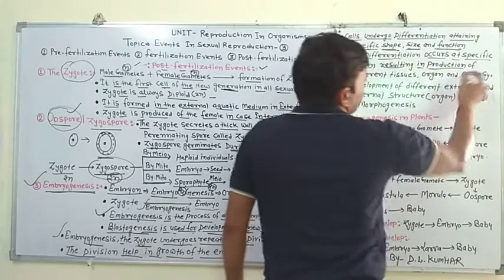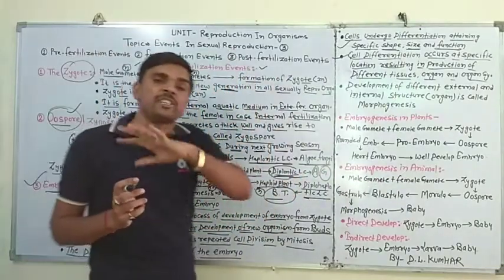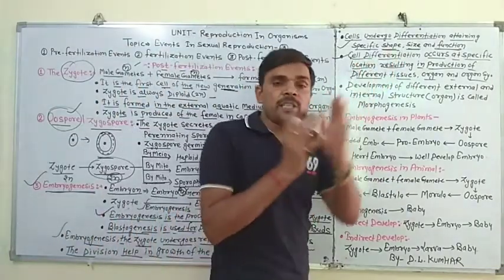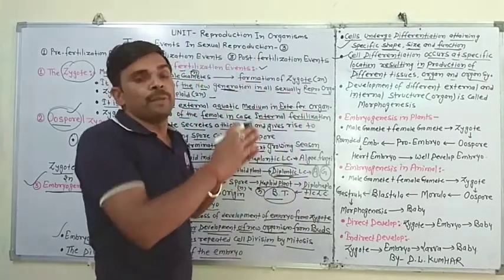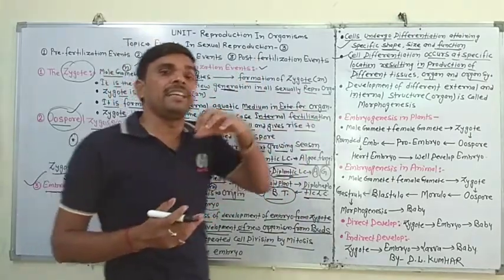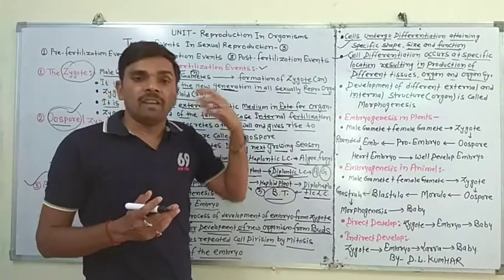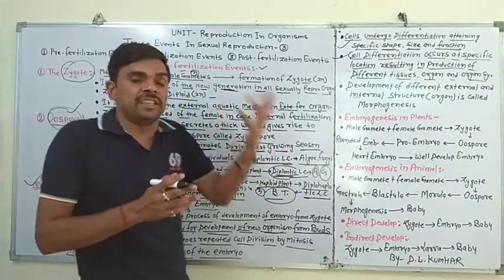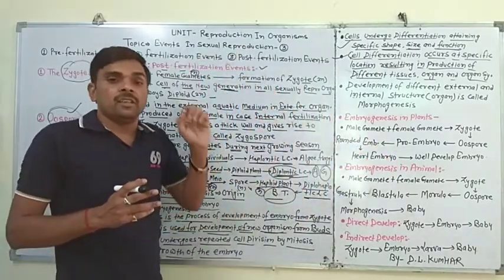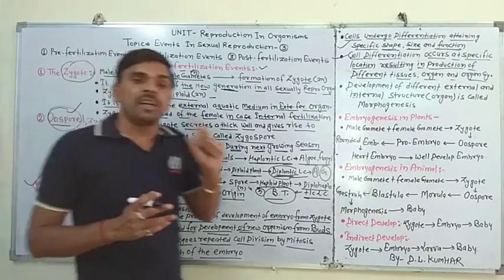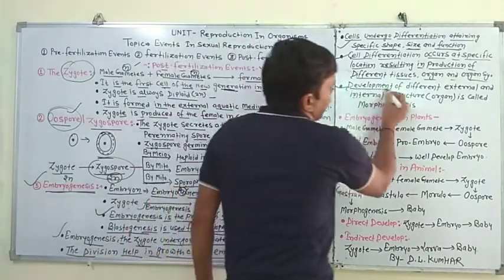Cells differentiation occurs at specific locations, resulting in production of different tissues, organs, and organ systems। जो cell differentiation होता है वो specified location पर होता है, और उससे विभिन्न प्रकार के organ और organ systems का development होता है।